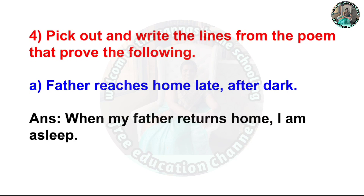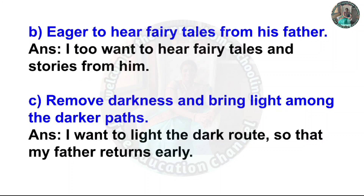Question 4: Pick out and write the lines from the poem that prove the following. A. Father reaches home late after dark — Answer: 'When my father returns home, I am asleep.' B. Eager to hear fairy tales from his father — Answer: 'I too want to hear fairy tales and stories from him.' C. Remove darkness and bring light among the darker part — Answer: 'I want to light the dark roots so that my father returns early.'